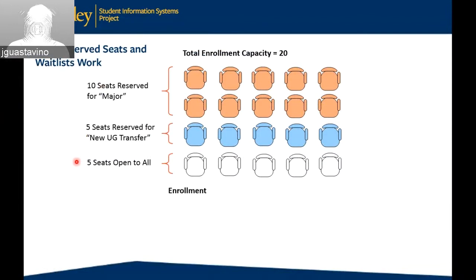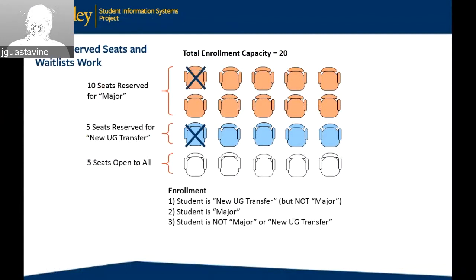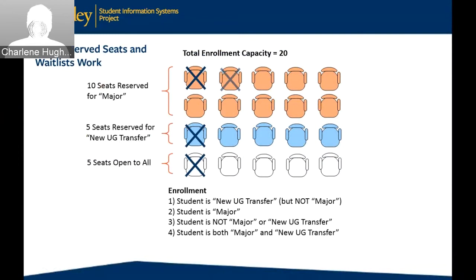Now we start to look at students as they enroll. The first student is a new undergraduate transfer but not a major — the system looks at whether they're a major: no. Is the student a new transfer? Yes — they take that seat. The second student is a major — they take one of the first seats. The third student is neither a major nor an undergraduate transfer — they get one of the open seats. A fourth student who is both a major and an undergraduate transfer — this has to do with the order in which you set up the groups.